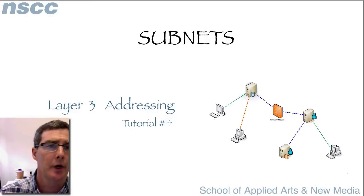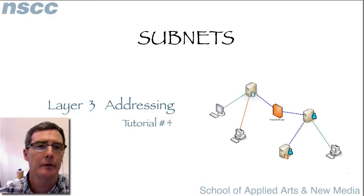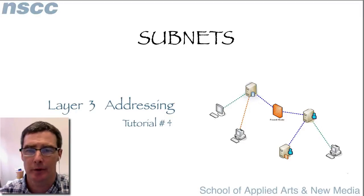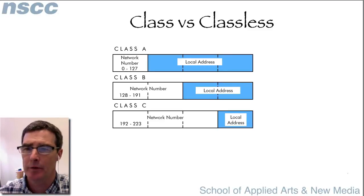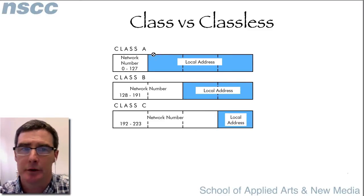In previous tutorials we talked about the limited number of IP version 4 addresses. Creating subnets is one way that we can efficiently use the limited addresses available. In this tutorial we'll look at taking a single address range and creating several smaller networks from it.